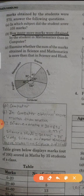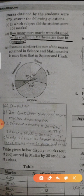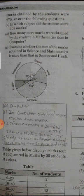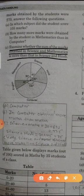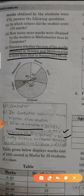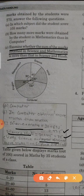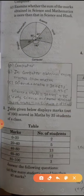Second is, how many more marks were obtained by the student in Mathematics than in Computer? In Computer obtain more marks than Maths, so this question is wrong. This question asks how many more marks were obtained by the student in Math. Computer have more marks than Maths. Part C: examine whether the sum of the marks obtained in Science and Math is more than that in Science and Hindi.